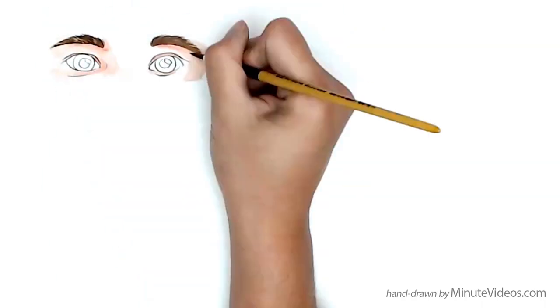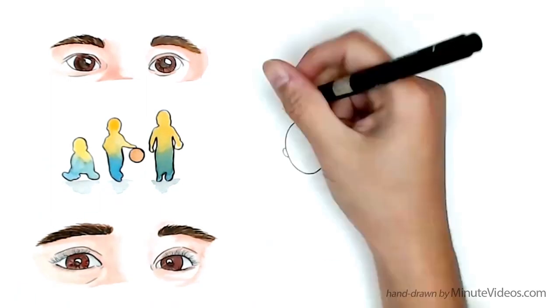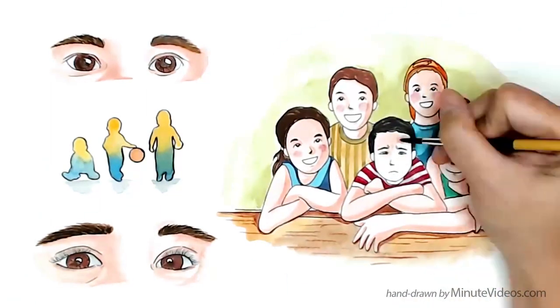The vision of kids is rapidly growing when they are young and once they reach six it's completely developed. However, one in five children have a vision disorder.